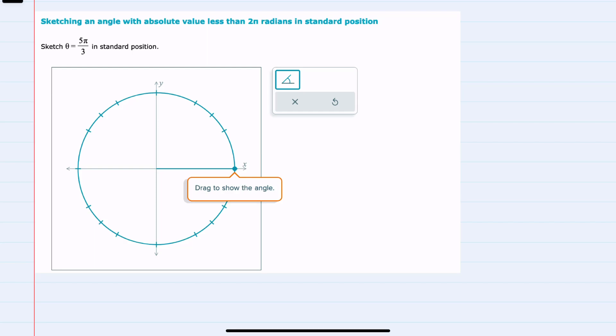In this video I'll be helping you with the Alex problem type called sketching an angle with absolute value less than 2π radians in standard position. We're asked here to drag this line around this unit circle to represent θ equals 5π over 3.